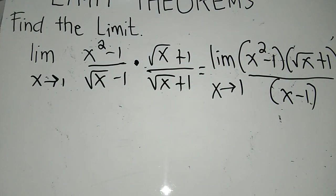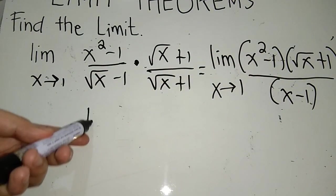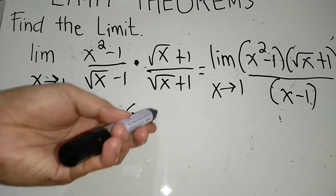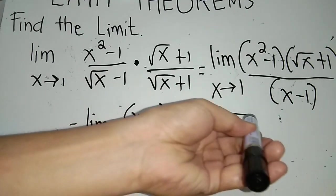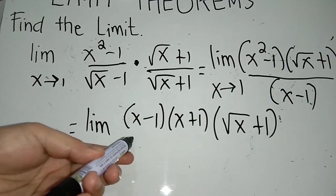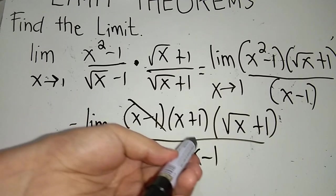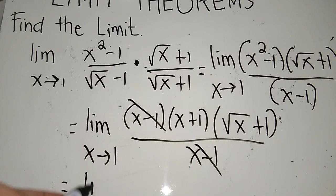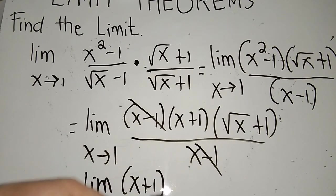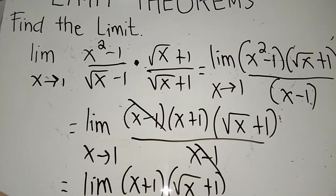For the numerator, x squared minus 1 is factorable as a difference of two squares, giving (x minus 1)(x plus 1). So we have the limit of (x minus 1)(x plus 1) times square root of x plus 1, over (x minus 1), as x approaches 1. We can now cancel the (x minus 1) terms.